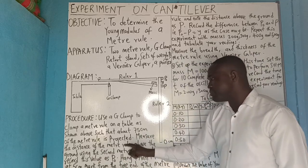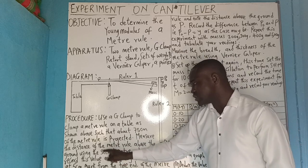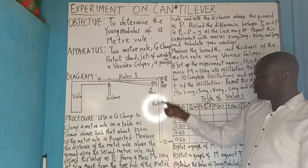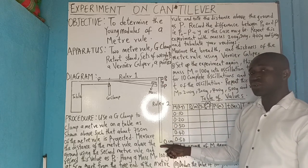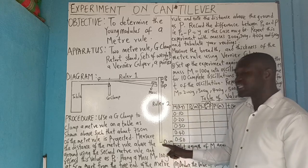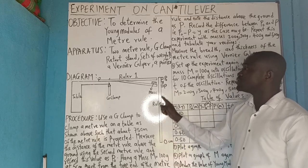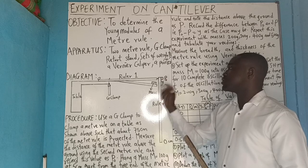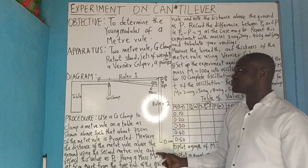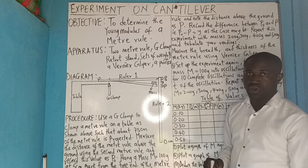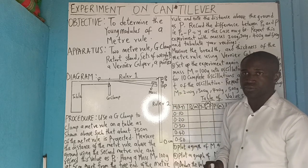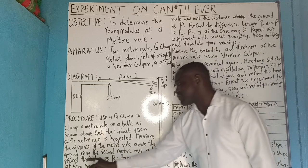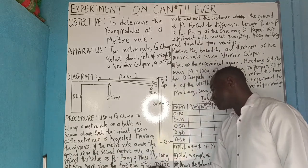Measure the distance of the meter rule above the ground using the second meter rule and record this value as Po. Keep the second meter rule vertically, starting from zero, and measure this distance from zero to this point — the height of this meter rule from the ground. Call it your Po.